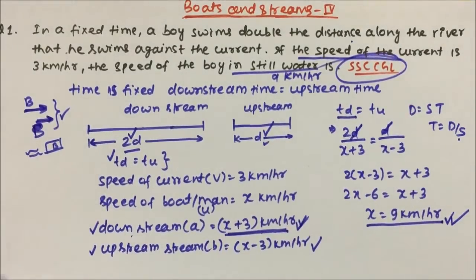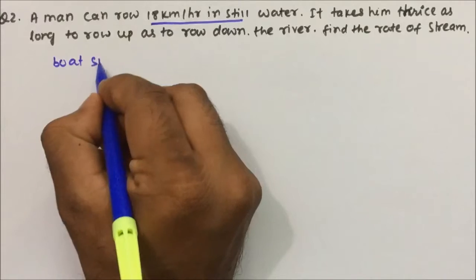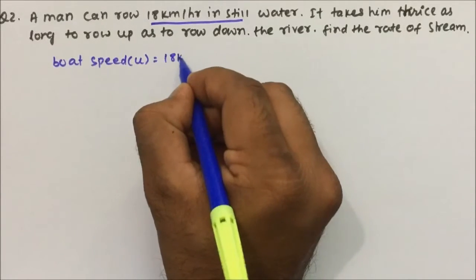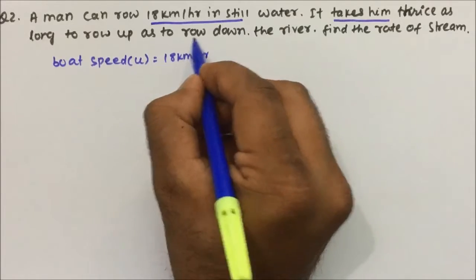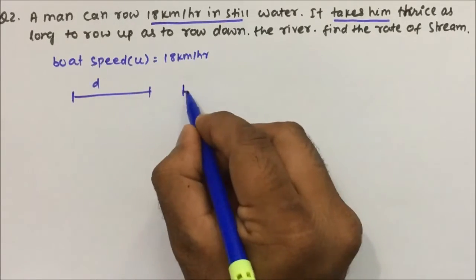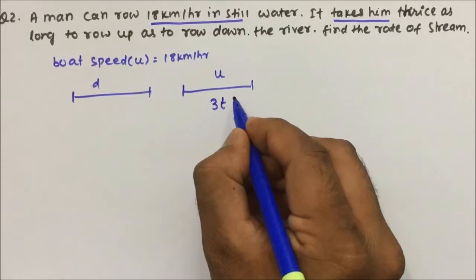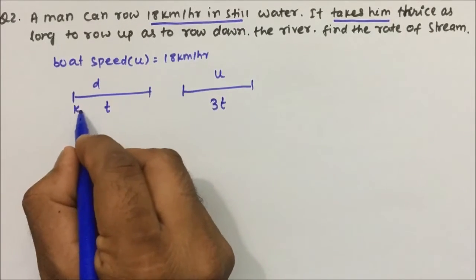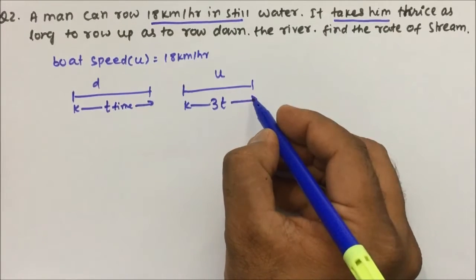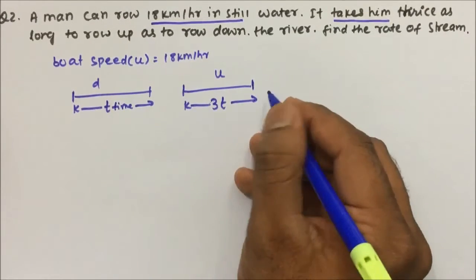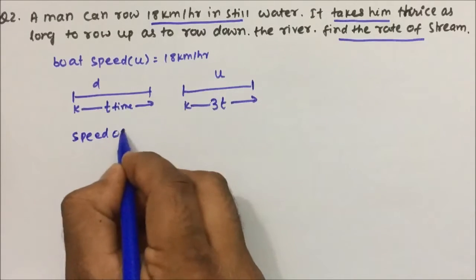This was an SSC CGL question. Question 2: A man can row 18 km/h in still water, so the speed of the boat u = 18 km/h. It takes him thrice as long to row upstream as to row downstream. So if downstream time is t, upstream time is 3t. The distance covered is the same in both directions. Find the rate of the stream.